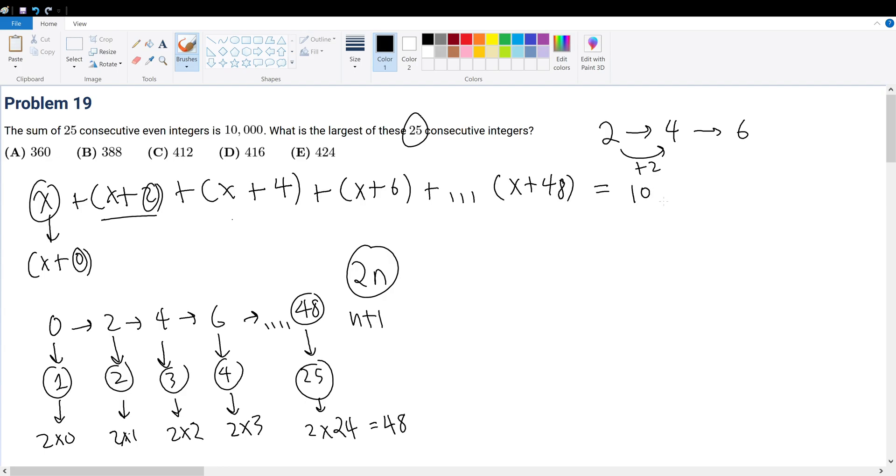So now that we have this formula, what do we do? Well, how many x's are there? We obviously know that there are 25 x's, so simplify and get 25x. But what about the constant? The constant is the arithmetic series of 0 plus 2 plus 4 plus all the way until 48.